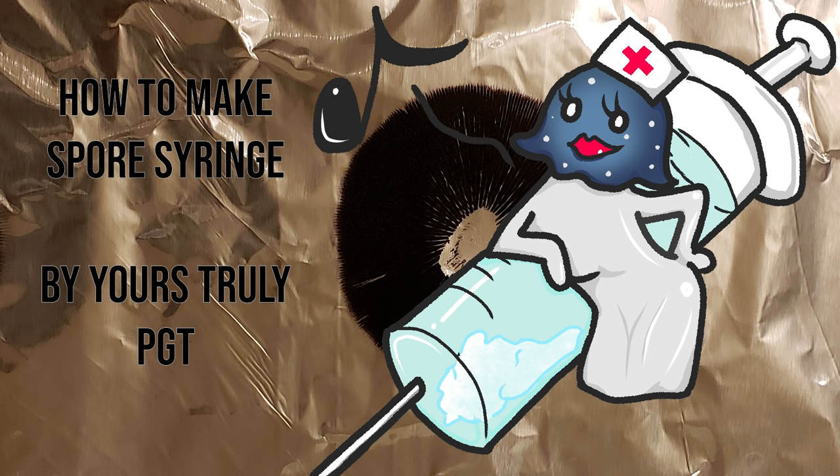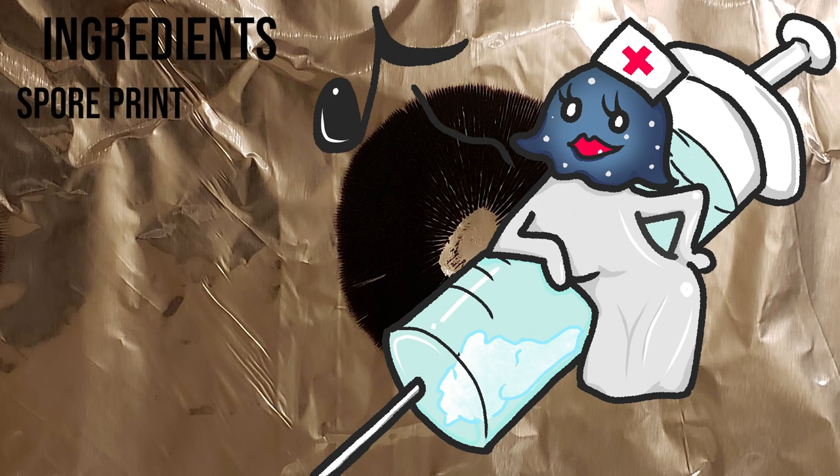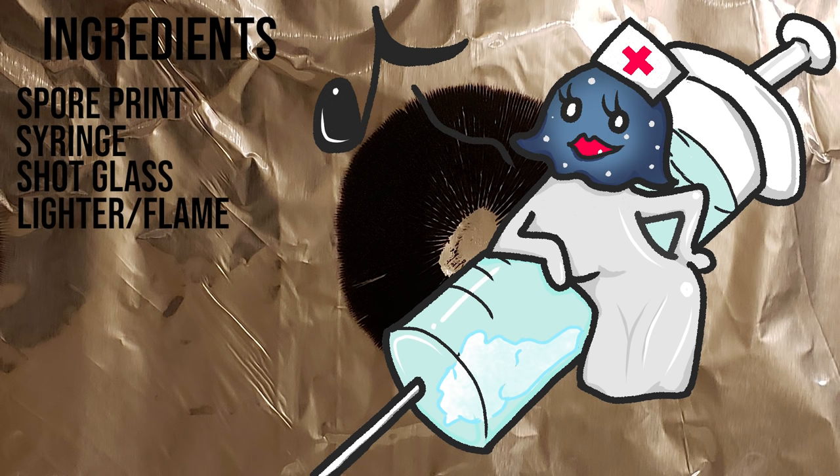Quick list of ingredients you're going to need: you're going to want a spore print, a syringe either used or new, you need a shot glass, a lighter or some kind of flame source to flame sterilize, and you want some isopropyl alcohol for sanitization.